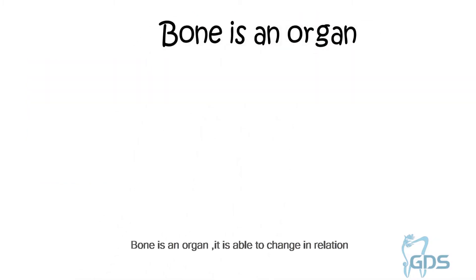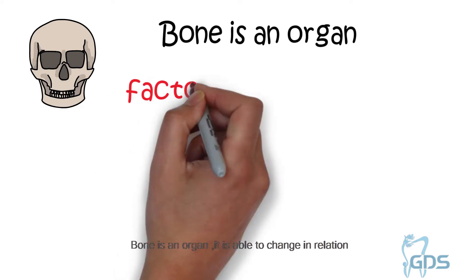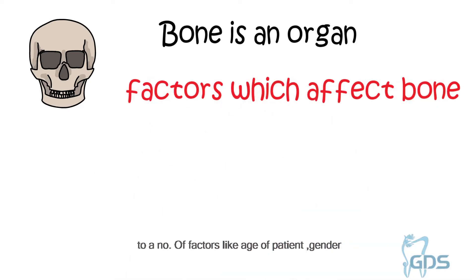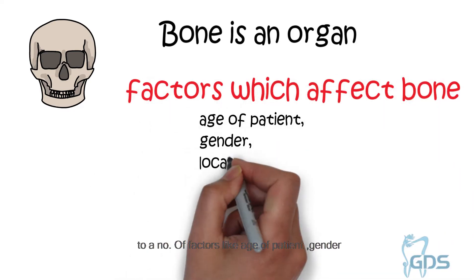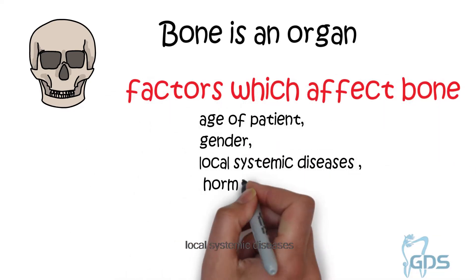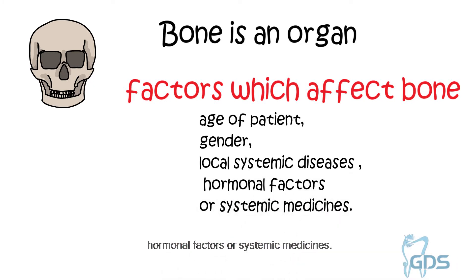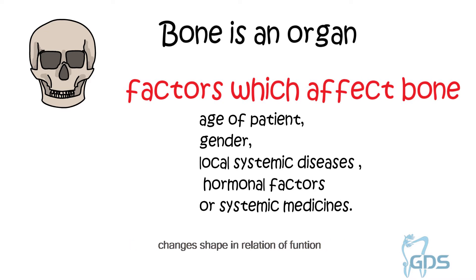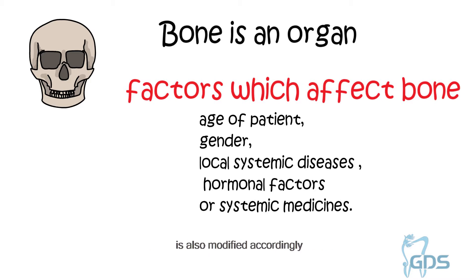Bone is an organ. It is able to change in relation to a number of factors like age of patient, gender, local systemic diseases, hormonal factors, or systemic medicine. The external architecture of bone, i.e. cortical bone, changes shape in relation to function, and internal bone structure, i.e. trabecular bone, is also modified accordingly.